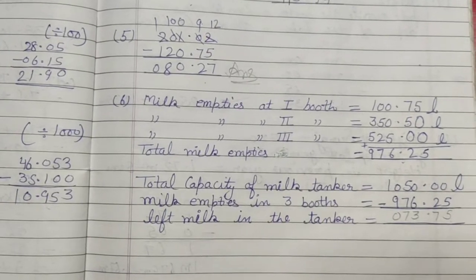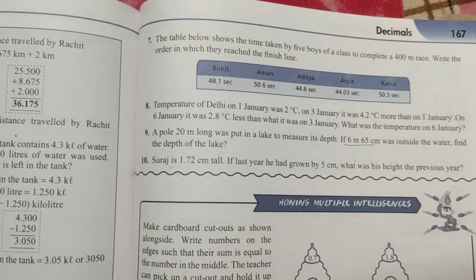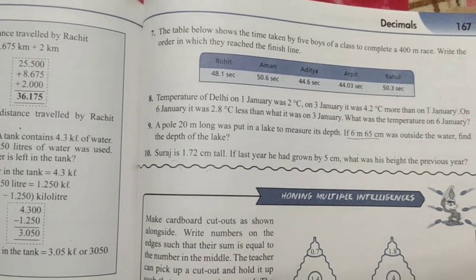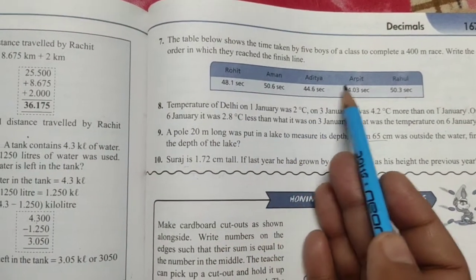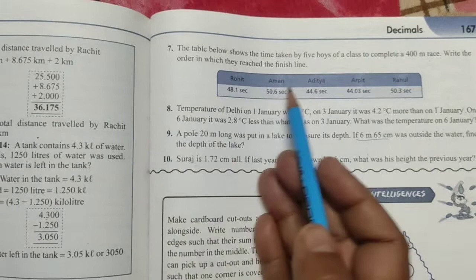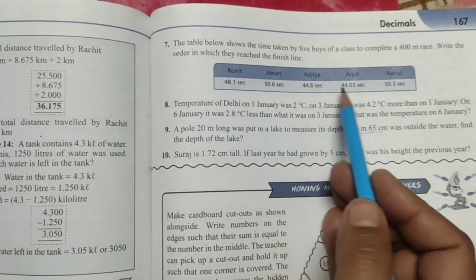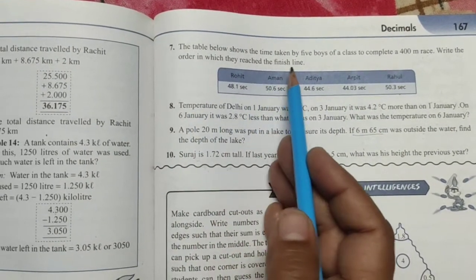So now, question number 7. The table below shows the time taken by 5 boys of a class to complete a 400-meter race. Under the table is made, there are Rohit, Aman, Aditya, Arpit and Rahul. They participated in a 400-meter race and each child's time is given below. Write the order in which they reached the finish line.